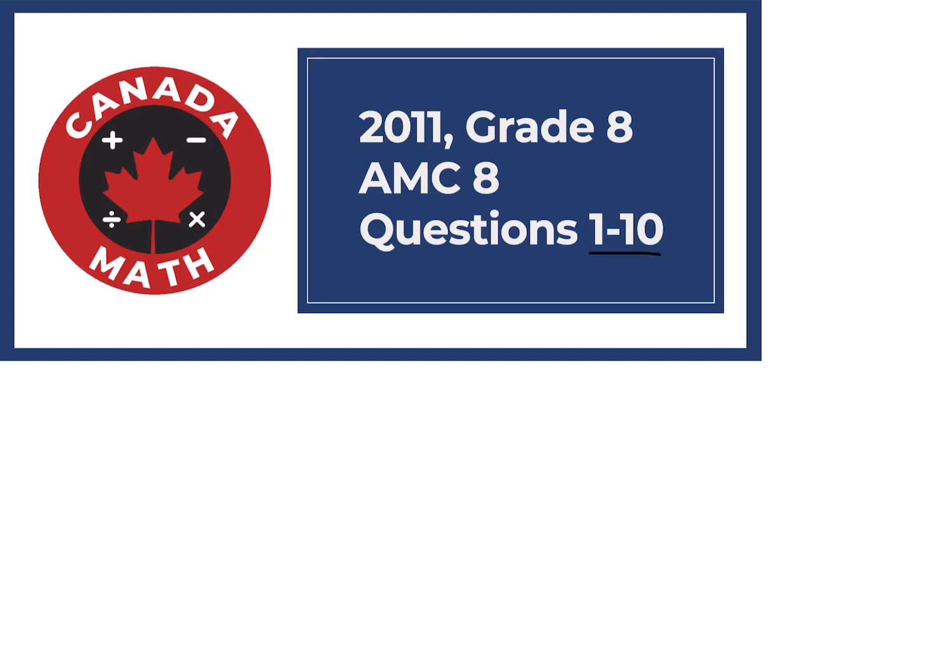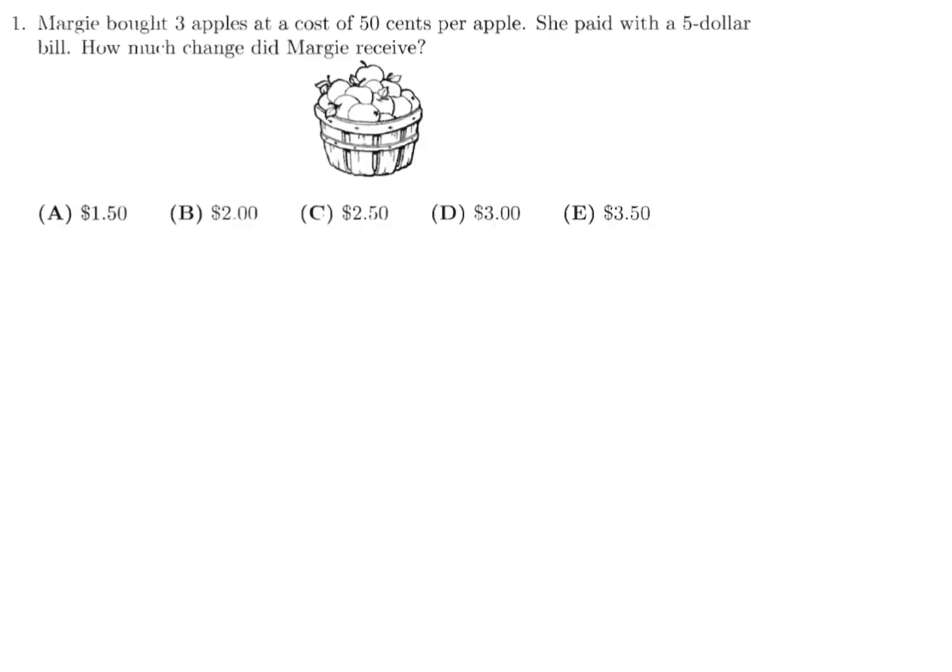Questions 1 through 10 on the 2011 Grade 8 AMC 8. Margie bought three apples at a cost of 50 cents per apple. She paid with a $5 bill. How much change did Margie receive? So three apples times 50 cents, or 0.5 dollars, is how much the cost is of those apples. So one dollar and 50 cents.